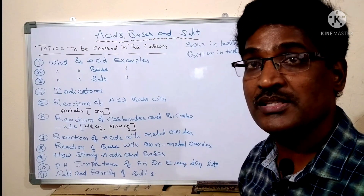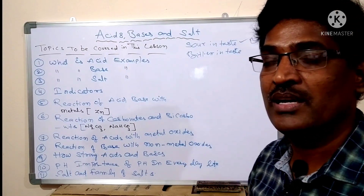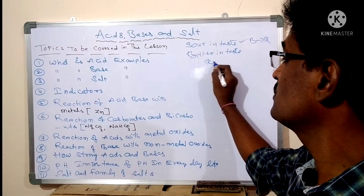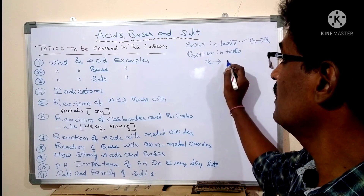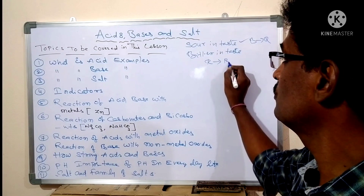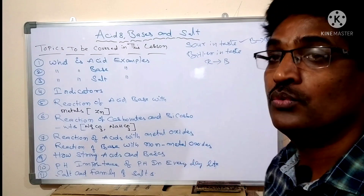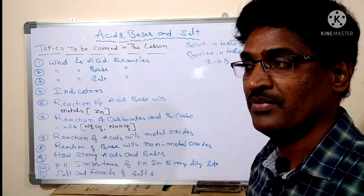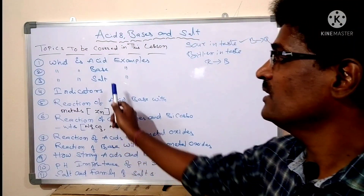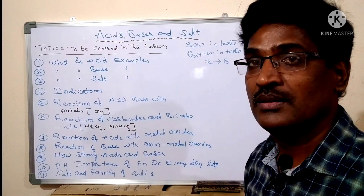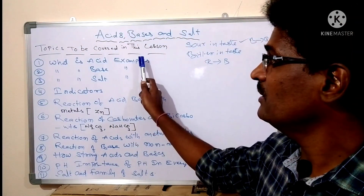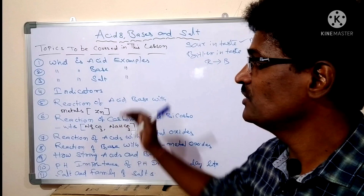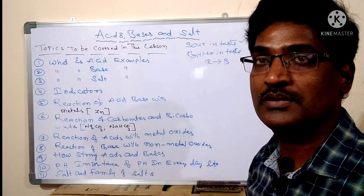Now, base. Which taste is it? Bitter in taste. Red litmus paper color is converted into blue. That is base. Now, salt — what is salt? Salt means when acid reacts with base, which gives rise to salt.